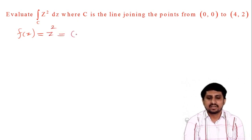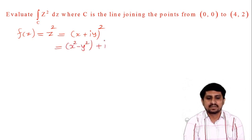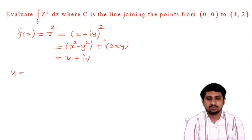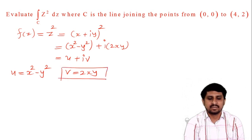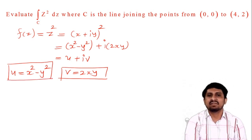z squared means what? z is nothing but x plus iy, so (x + iy) whole squared equals x squared minus y squared plus i times 2xy. When we compare f(z) with u plus iv, u is nothing but x squared minus y squared, and v is nothing but 2xy. Now put these two values in our original formula for complex integration.